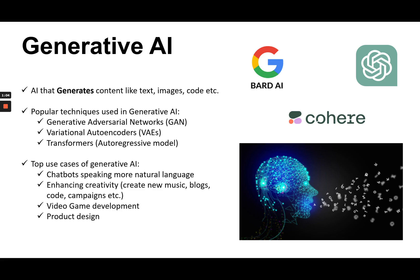Some of the popular techniques used in generative AI are: Generative Adversarial Networks (GAN), Variational Autoencoders (VAE), and Transformers, which is an autoregression model. Regarding GAN: it uses two ML models trained at the same time. One model is called the generator and the other is called the discriminator. The generator creates new output that resembles the training data, and the discriminator evaluates the generated data.